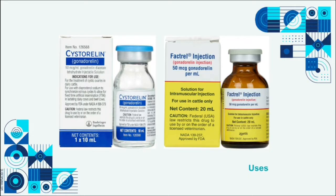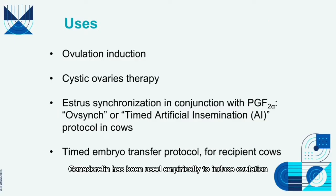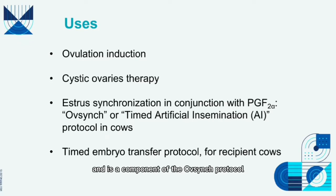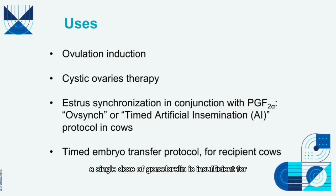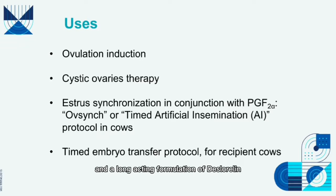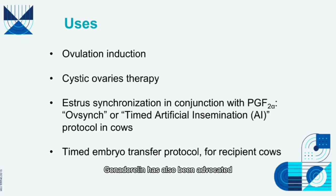Gonadorelin has been used empirically to induce ovulation at the time of breeding in both cattle and horses, and is a component of the OvSync protocol. Due to physiological differences — a prolonged LH surge lasting 24 to 36 hours in horses — a single dose of gonadorelin is insufficient for reliable ovulation induction, and a long-acting formulation of deslorelin is more commonly used.